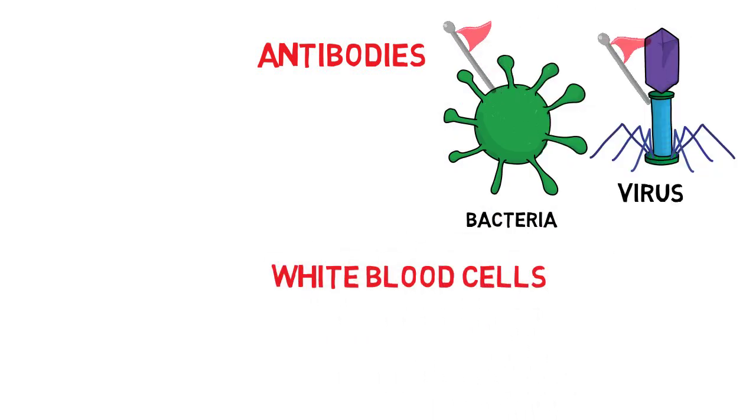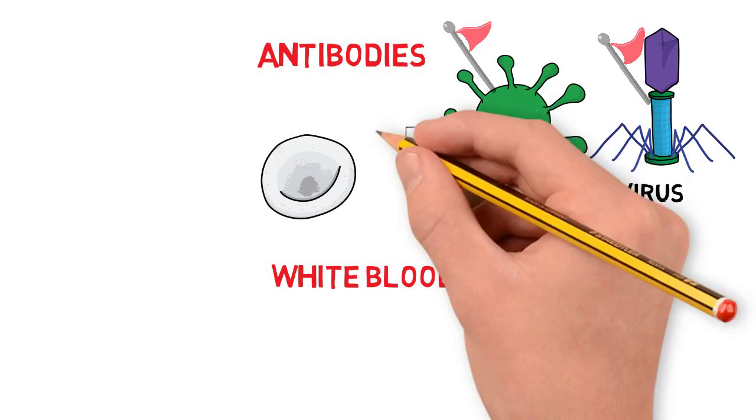Antibodies are like small flags that tag a foreign invader and mark them as foreign. Once a cell has been flagged, white blood cells will come along and eat up the foreign cell.